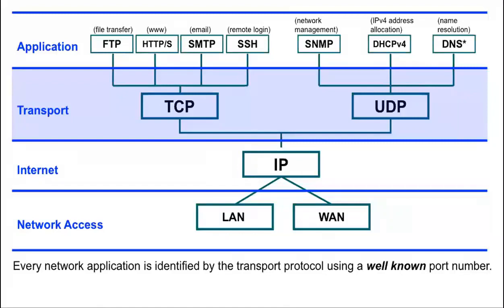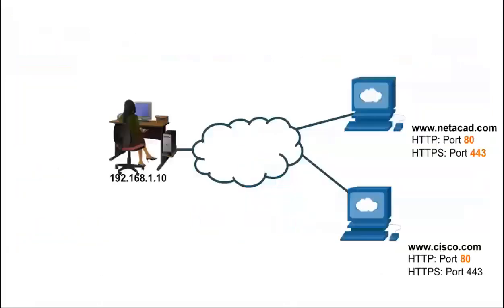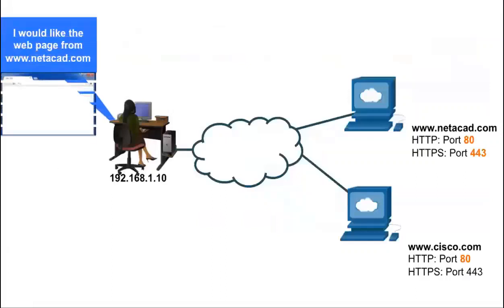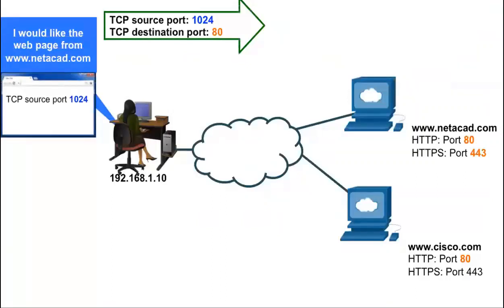TCP and UDP use source and destination port numbers to keep track of application conversations. Every network application is identified by the transport protocol using a well-known port number. The source port number is associated with the application that originated the request, known as the client computer. The destination port number is usually a well-known port number associated with the destination application on the remote device, the server computer.